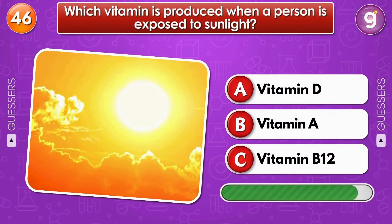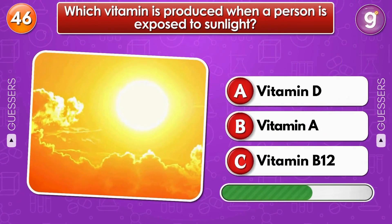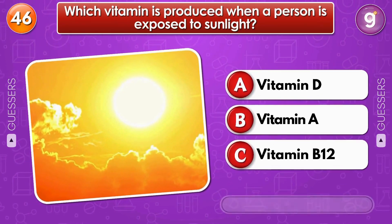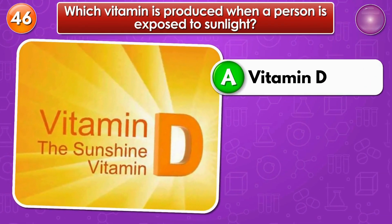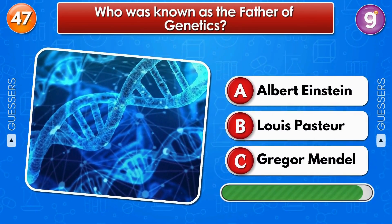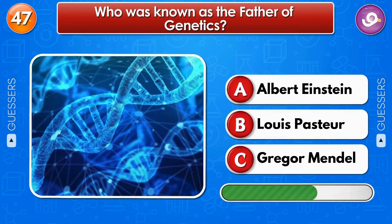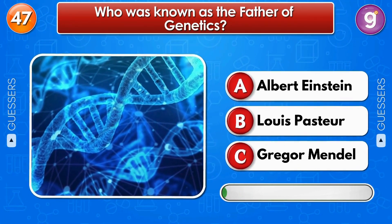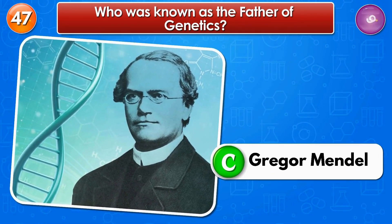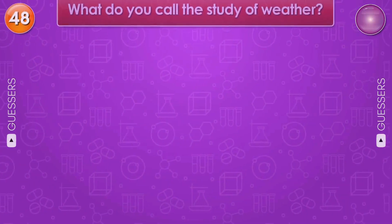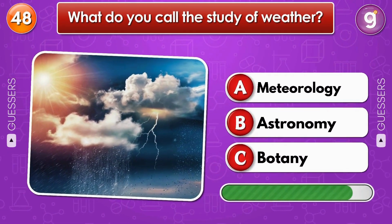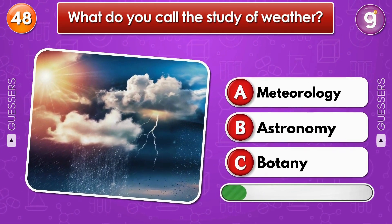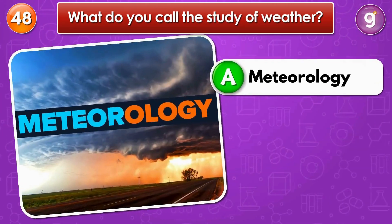Which vitamin is produced when a person is exposed to sunlight? Vitamin D. Who was known as the father of genetics? Gregor Mendel. What do you call the study of weather? Meteorology.